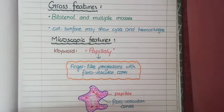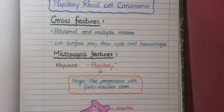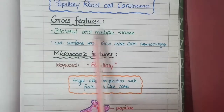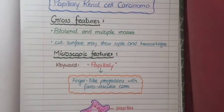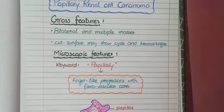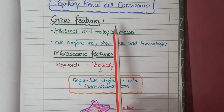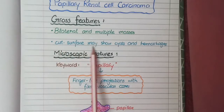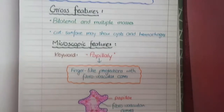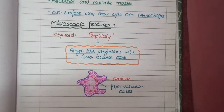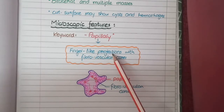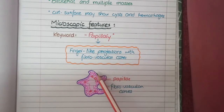On gross specimen, papillary renal cell carcinomas appear as bilateral or multiple masses, meaning they can be present in both kidneys, unlike the solitary mass seen in clear cell carcinoma. The cut surface similarly shows cysts and hemorrhages. Microscopically, the key word is papillary — the light microscopic picture shows finger-like projections called papillae, which are lined by proliferating neoplastic epithelial cells.